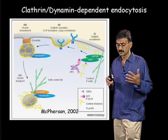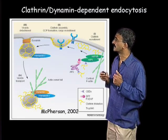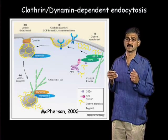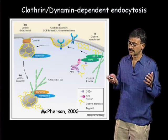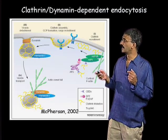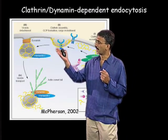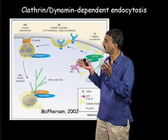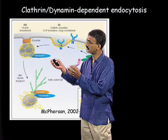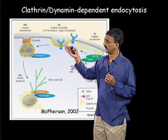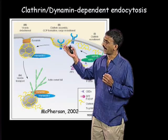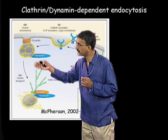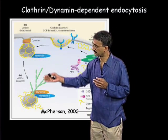The story in my laboratory starts with trying to understand the endocytic process. In cells, one of the best characterized means of endocytosis is clathrin and dynamin-dependent endocytosis, where these components collaborate to make membrane pits, and these pits then pinch off material at the cell surface, bringing them into the cell as endocytic vesicles.